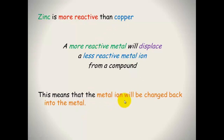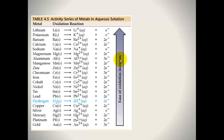Copper ions changed back into copper metal. The more reactive metal, zinc, displaced the ions in solution. This is the reactivity series, from the most reactive metals at the top down to the least reactive metals.